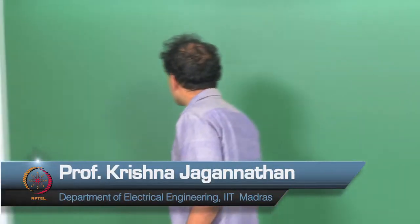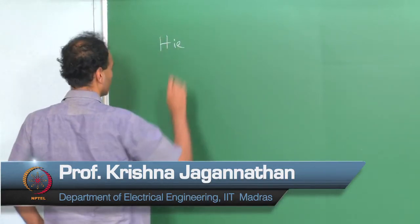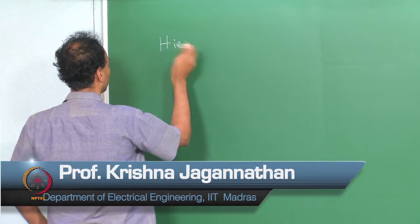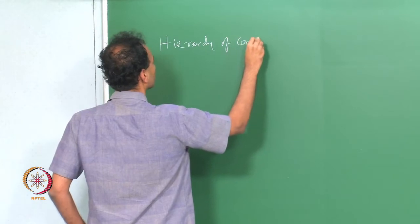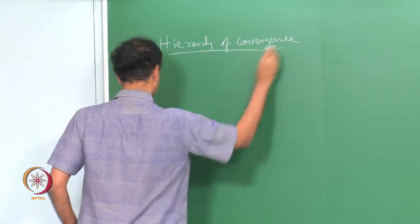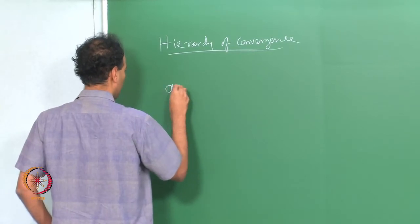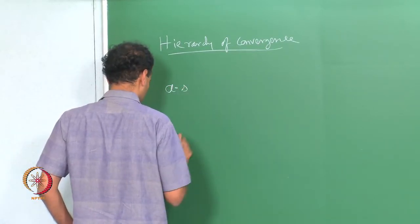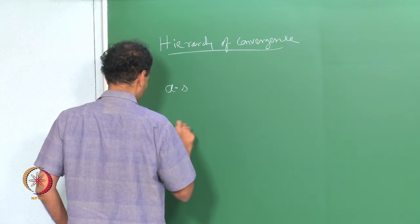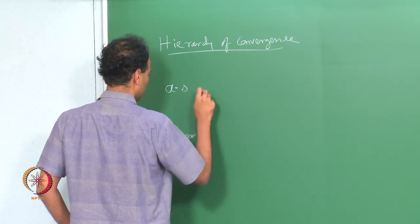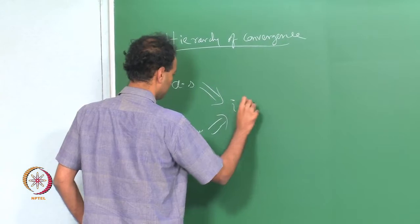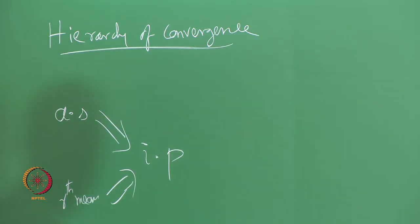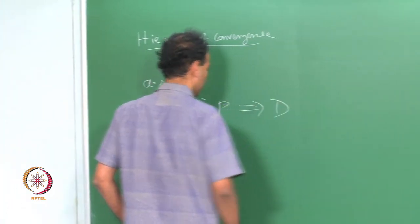We were discussing hierarchy of convergence. We were talking about various notions of convergence and which of these notions imply the other. The main result we had was that almost sure convergence and rth mean convergence both imply convergence in probability, and convergence in probability implies convergence in distribution.